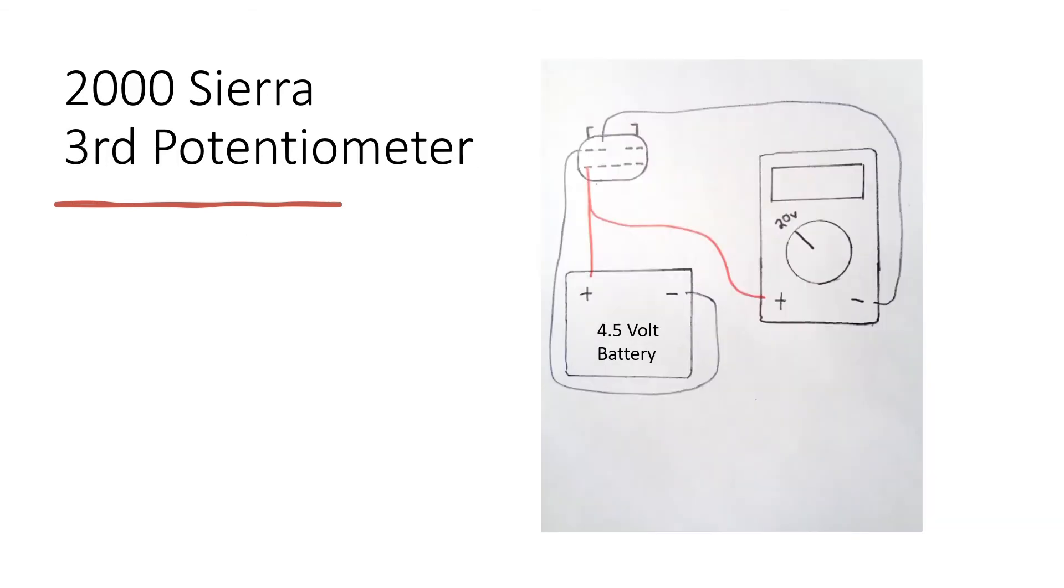For the third potentiometer—yes, this actually has three potentiometers—you connect the negative from the battery to this top left pin, the negative from the multimeter to this second from the top left pin, and the positive from both the battery and the multimeter should connect up to this bottom left pin.